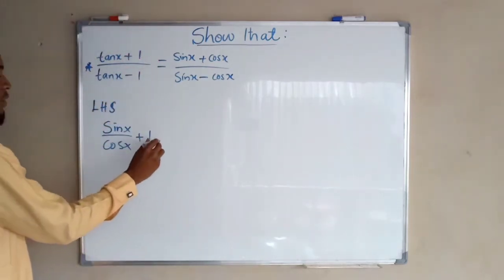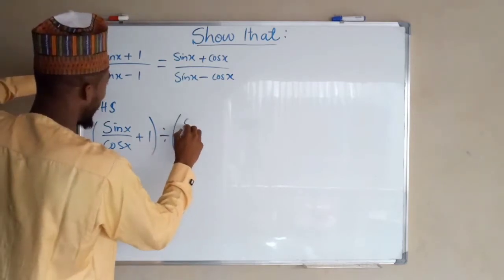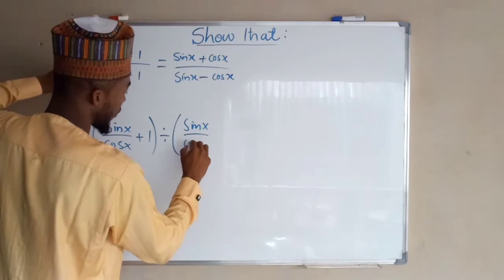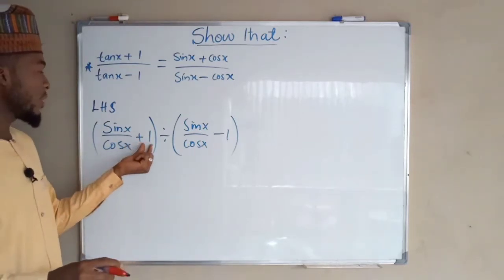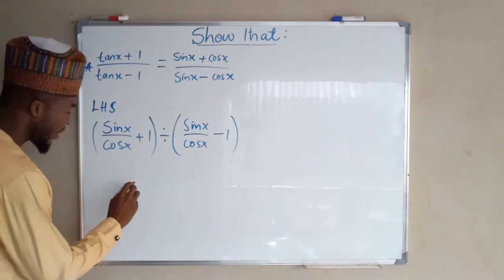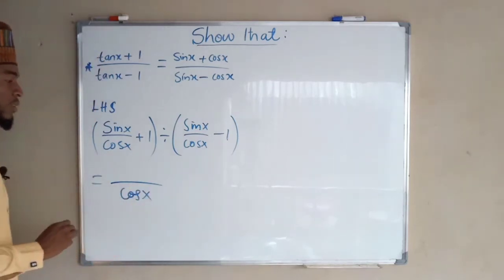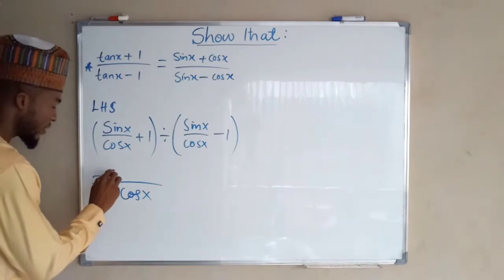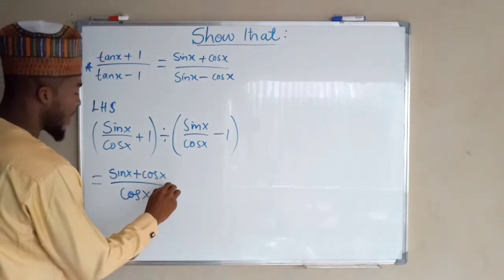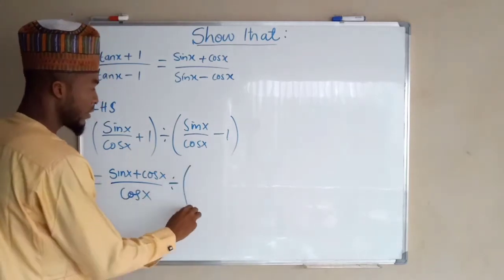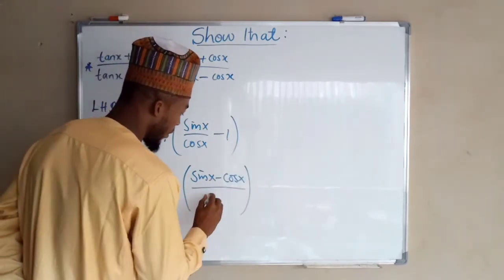This is our numerator divided by the denominator, which is tan x, that is sin x over cos x minus one. If we express one in terms of cos x it becomes cos x divided by cos x. Having the same denominator, we have a single denominator which is cos x. On the numerator we have sin x plus cos x divided by cos x, and similarly sin x minus cos x divided by cos x.